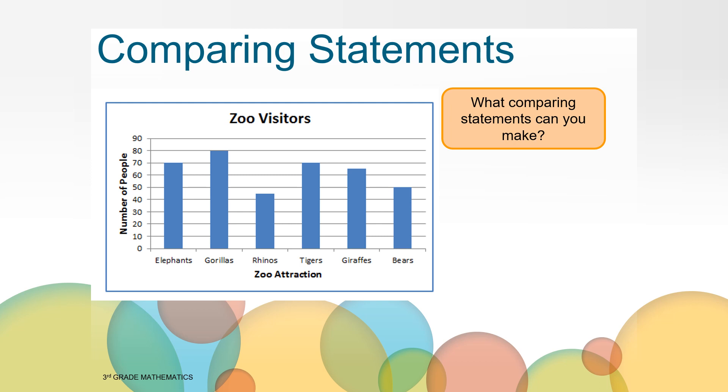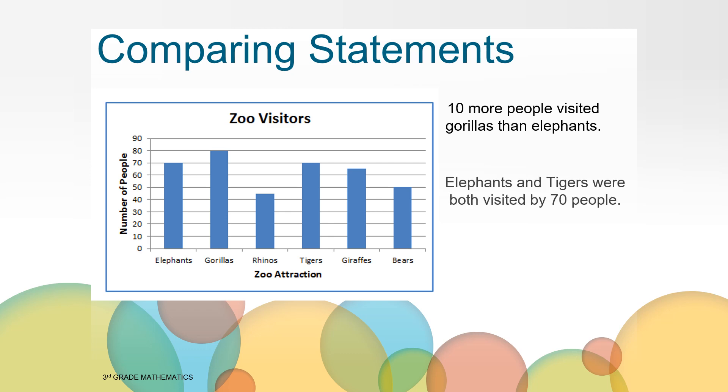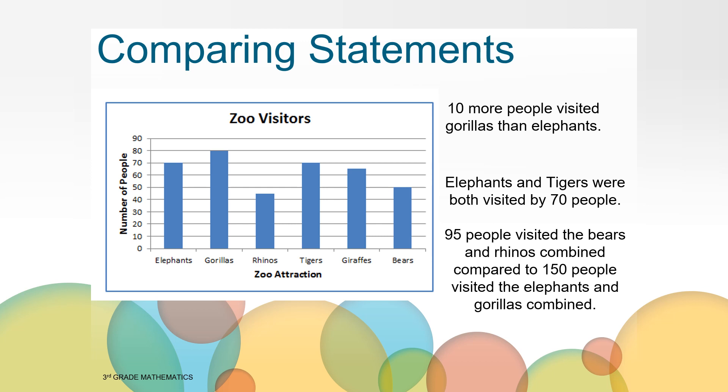Can you come up with a statement that compares the data from the bar graph? Take a moment and write down the statement that you think of. Here are a couple of examples. Again you might have come up with something different and that is okay. Ten more people visited the gorillas than the elephants. Another statement could be elephants and tigers were both visited by 70 people. Here's another one. Ninety-five people visited the bears and the rhinos combined compared to a hundred and fifty people that visited the elephants and gorillas combined. How did you do on your statement?